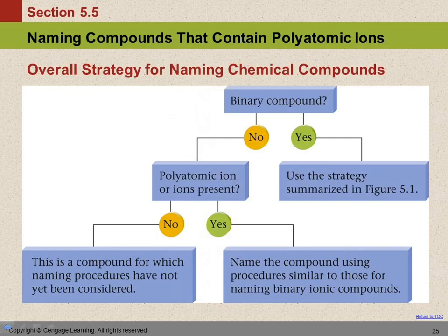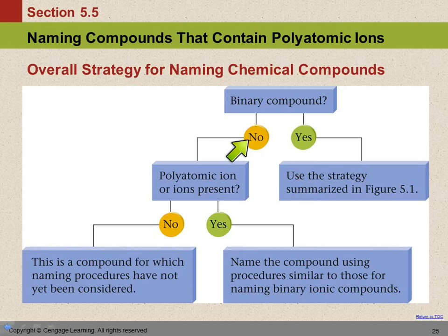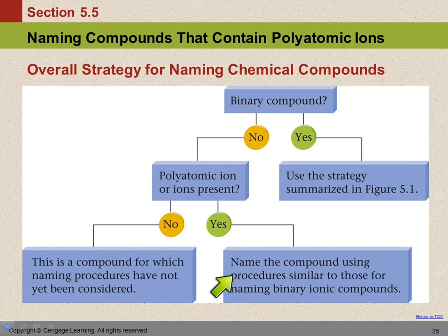Here's a flow chart — overall strategy for naming chemical compounds. First, ask yourself: is this a binary compound? If yes, use the strategy from the previous flow chart: look at the first element; if it's a metal use ionic naming, if not use prefixes. If it's not binary — more than two elements — ask yourself: are there polyatomic ions? If yes, name it similarly to ionic compounds with two ions. If there's no polyatomic ion, it's a compound type we haven't learned yet.